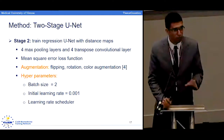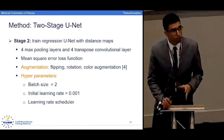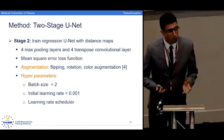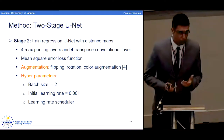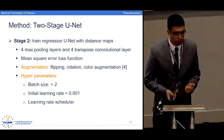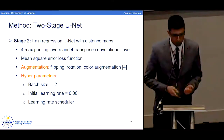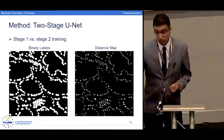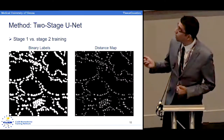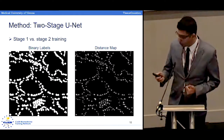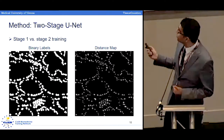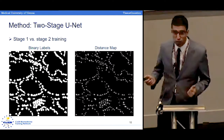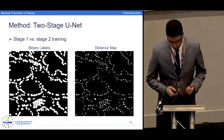In the second stage, instead of training the algorithm with binary labels, we train the algorithm with the distance maps. Because we are dealing with a regression problem in this stage, we change the loss function to mean square error, and the rest of the parameters are almost the same. As you can see in the distance map, we have a clear separation between the objects, and we can use this information for separating the touching objects.